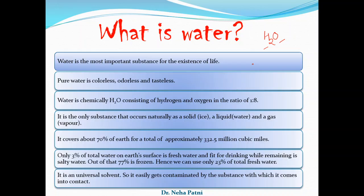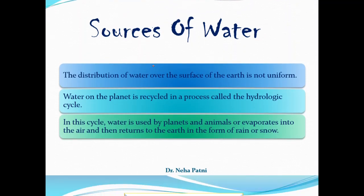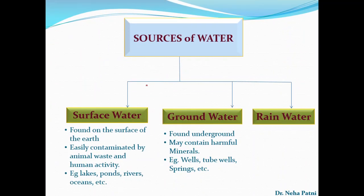Pure water has to be colorless, odorless, and tasteless, but it does exhibit some of these characteristics if impurities are present. So first we need to identify where the water came from — the source is the first step. Broadly, there are three major sources of water: surface water, ground water, and rain water.